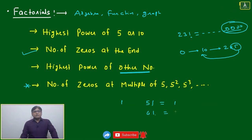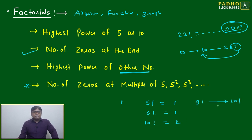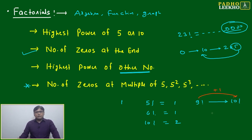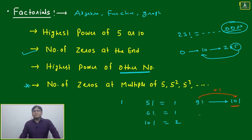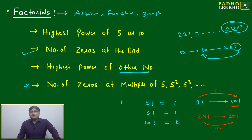6 factorial gives 1 zero, 7 factorial gives 1, 8 factorial gives 1, 9 factorial gives 1 — but 10 factorial gives 2 zeros. So jumping from 9 factorial to 10 factorial, the number of zeros increases by 1, because 10 is a multiple of 5. Similarly, jumping from 24 factorial to 25 factorial, the number of zeros jumps by plus 2, because 25 is a multiple of 5².